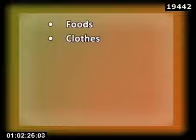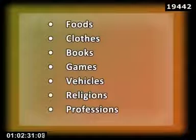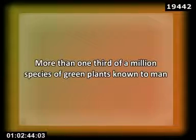Humans learn to identify, describe, name, and classify foods, clothes, books, games, vehicles, religions, professions, and any other objects that they come across or that influence their life. The process begins and ends with life. There are more than one third of a million species of green plants known to man today, this information having been accumulated through efforts of several millennia. Although man has been classifying plants since the advent of civilization,